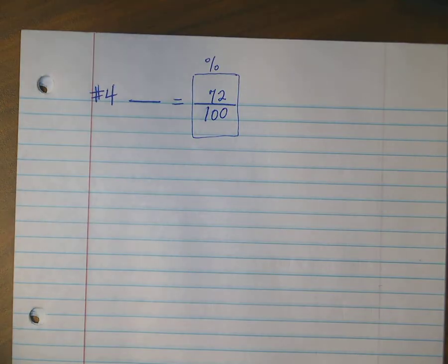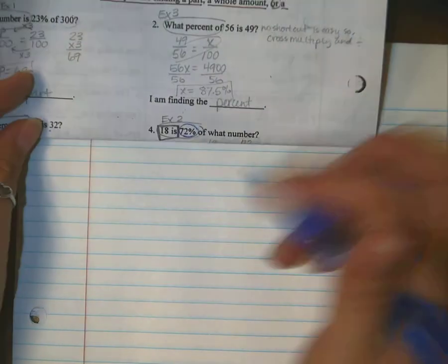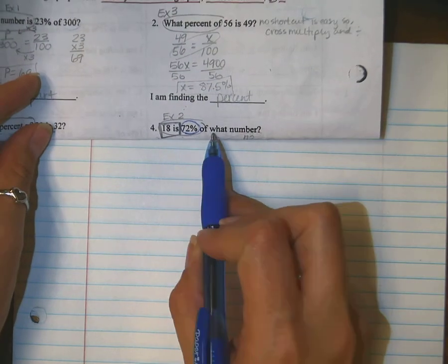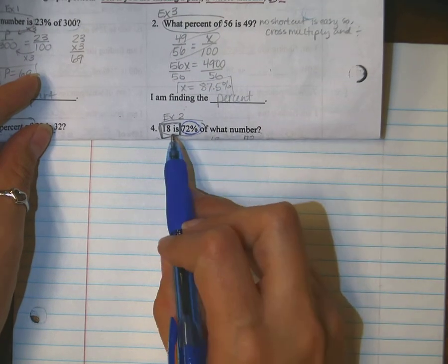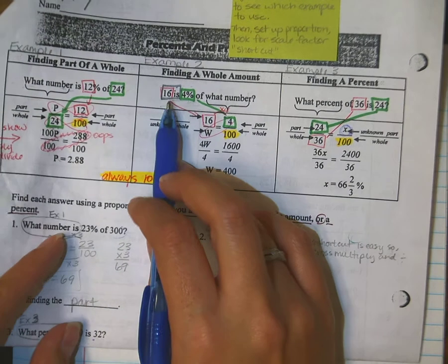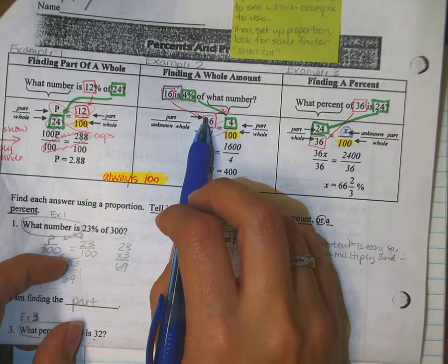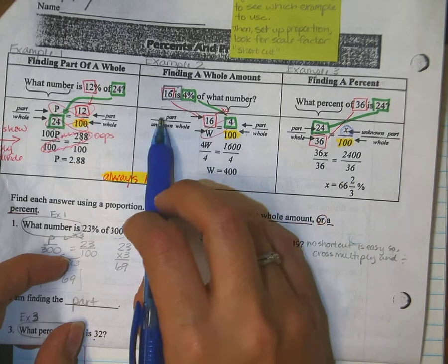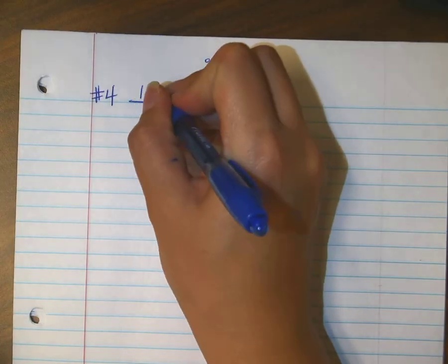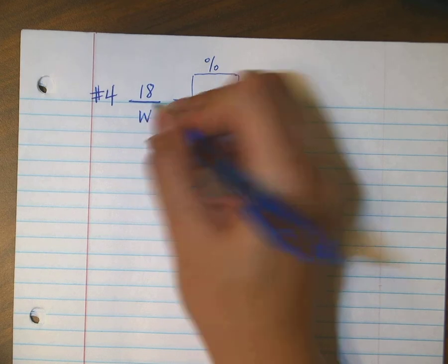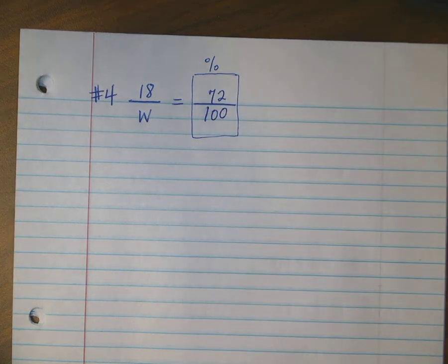Now looking back, it says 18 is 72% of what number? Here, it tells me that 16 is the part, which means for my problem 18 is also the part. That means it goes on top. And I'm going to go ahead and put W for the whole because that's what I'm looking for.